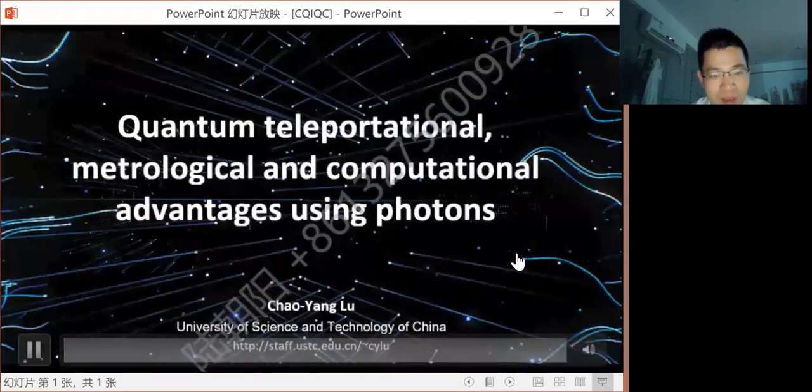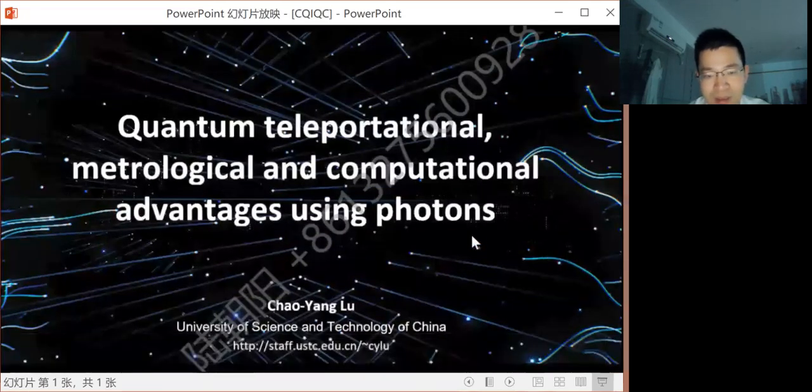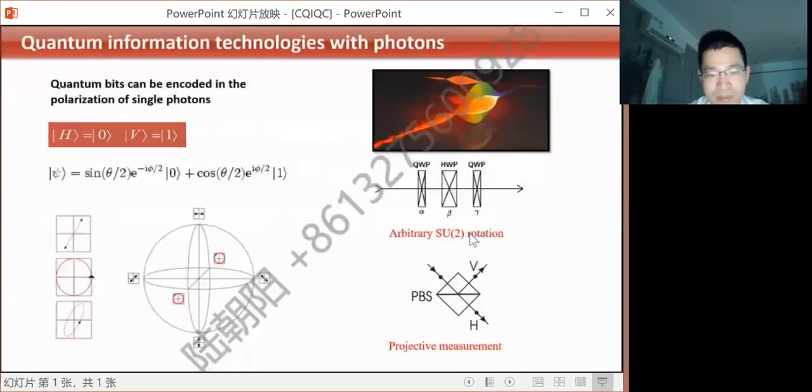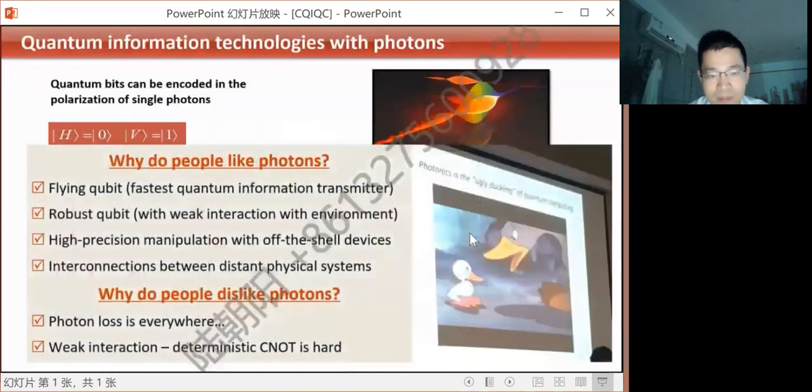I will discuss some of our recent work on quantum advantages in computing, communication, and metrology. Among many different types of qubits, photons have certain advantages and disadvantages. They are fast-flying, have very weak interactions with the environment, so they are very robust to travel over long distances. But photons also have very weak interactions with other photons. This is also a major disadvantage for quantum computing, a reason why many people think photonics is the ugly duckling of quantum computing.